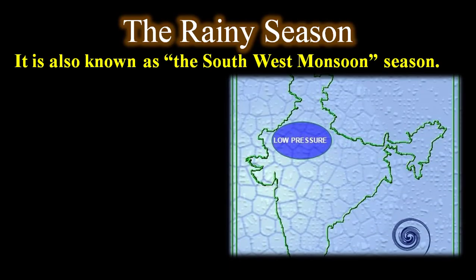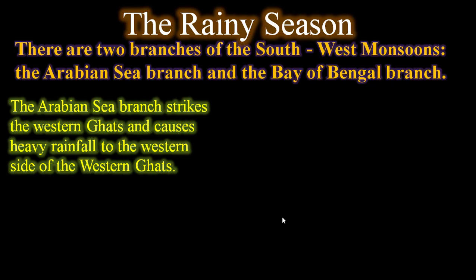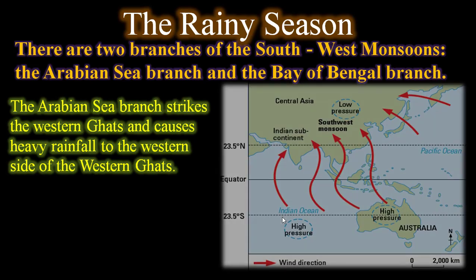The rainy season is also known as the southwest monsoon season. By the end of summer, temperature rises significantly, and a low pressure area develops over the central part of India. On the other hand, there is high pressure over the Indian Ocean. Hence moisture-laden winds blow from the southwest towards India.